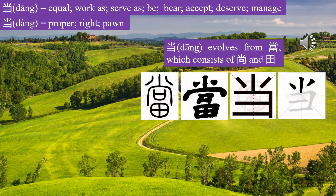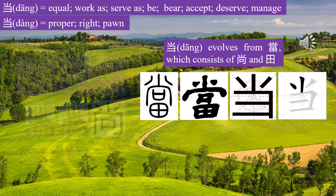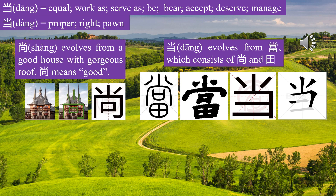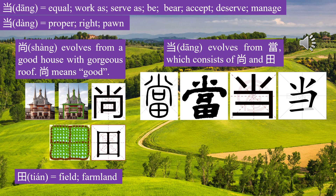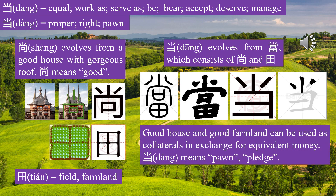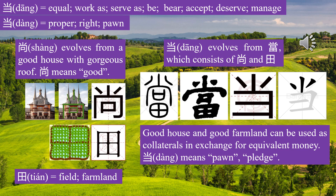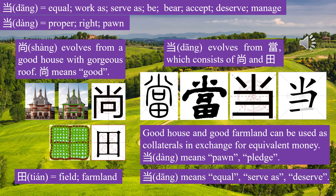Character 当 (Dāng/Dàng) evolves from traditional 当, which consists of 尚 and 田. 尚 evolves from a good house with a gorgeous roof, meaning good. 田 means farmland. A good house and good farmland can be used as collateral in exchange for equivalent money. This character has two pronunciations: Dàng means pawn or pledge; Dāng means equal, serve as, deserve.